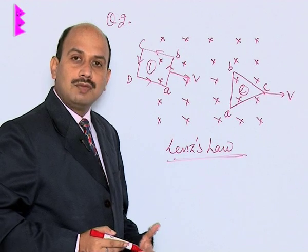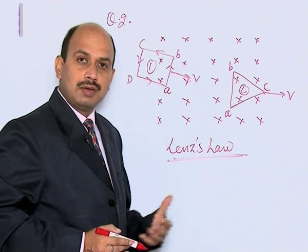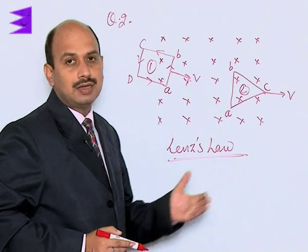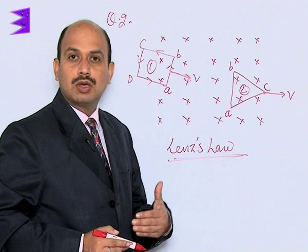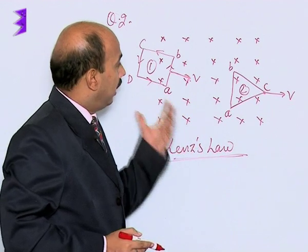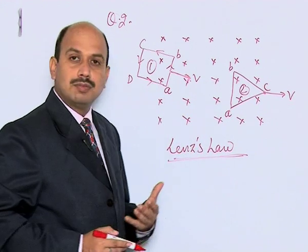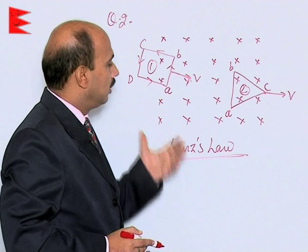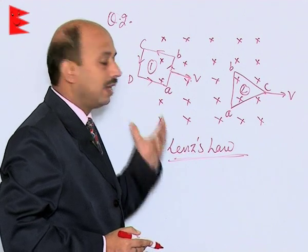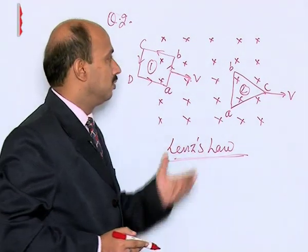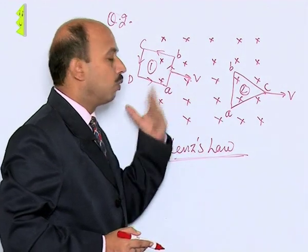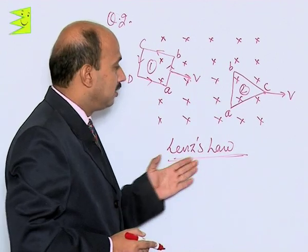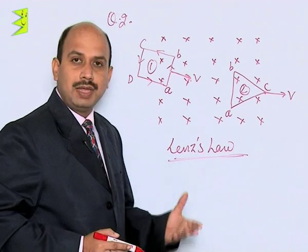The induced current will produce a magnetic field which is outward, and that is opposite to the increase in magnetic flux. So, the direction of the current in the loop is in the anticlockwise direction. We have used Lenz's law here to explain this.